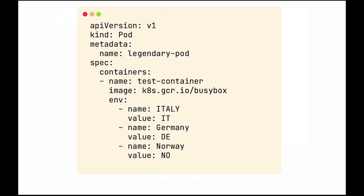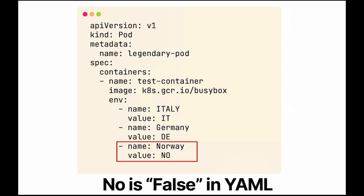Let's say you want lists as environment variables with a country code. And coincidentally, you have Norway in your list with a code of NO. Unfortunately, NO translates as FALSE in YAML. Watch out for the NO problem — it's better to use quotes in this case.